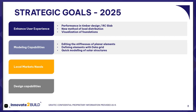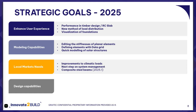For modeling capabilities, you will be able to edit the stiffnesses of planar elements. You will be able to define elements with a data grid and also define the geometry of solar structures using a new quick model tool. When it comes to local needs, there are several improvements related to climatic loads, some new functional capabilities related to system management. Also, we plan to release composite steel beams design this year, but these will be released in update 25.1.